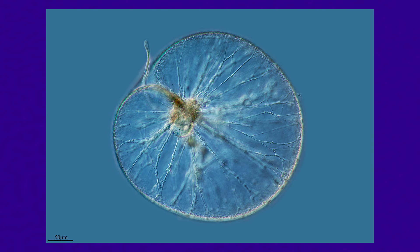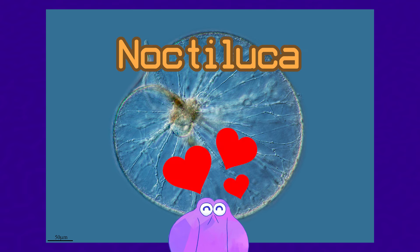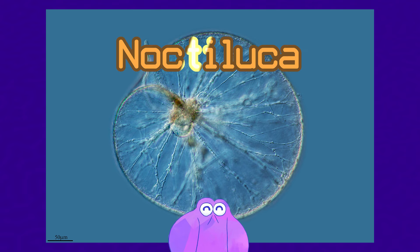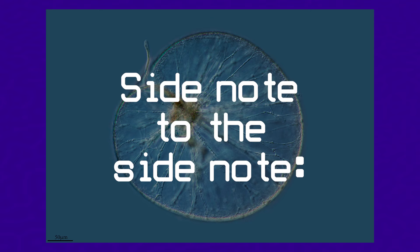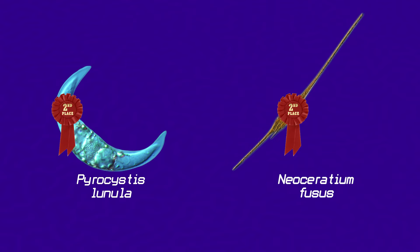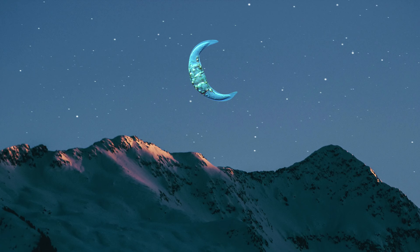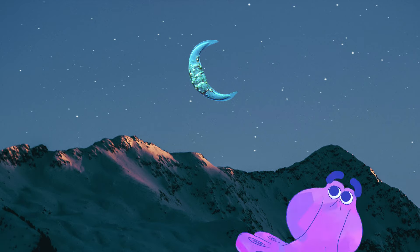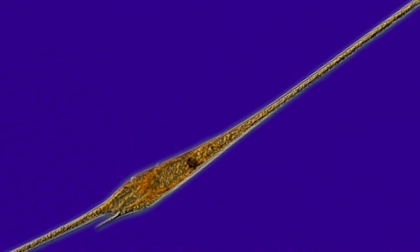But anyway, this is a bioluminescent dinoflagellate. And side note, this is my favorite species of dinoflagellate, which I didn't know I had until I started making this video. But this is Noctiluca, and I adore her because she has such a pretty name that basically translates to nightlight. But side note to the side note: Pyrocystis lunula and Neoceratium fusus — whatever — are pretty close seconds because, oh my god, why is she shaped like a crescent moon? She is so beautiful. And look at this long boy — look at him! He's so long, I love him so much. He looks like Peabody from Portal 2.